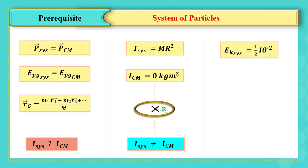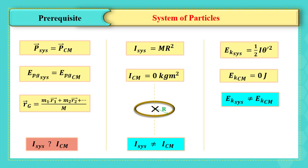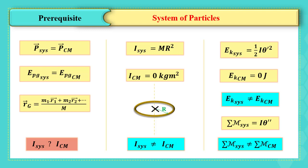Moreover, the kinetic energy is given by ½Iθ'² in rotation, and it depends on I. Therefore, the kinetic energy of the system is not equal to the kinetic energy of the center of mass, which is zero. Similarly, the sum of moments of forces acting on the system, Iθ'', is not equal to that of the center of mass, which is zero. As a conclusion, in rotation we cannot treat the system as a particle at its center of mass when studying kinetic energy or applying Newton's second law.